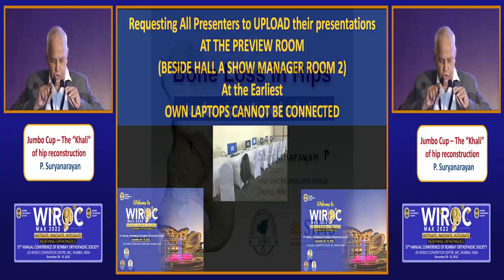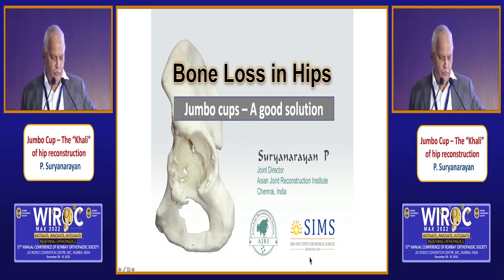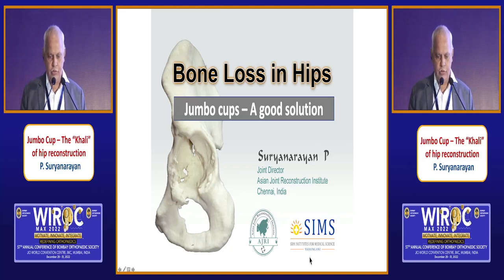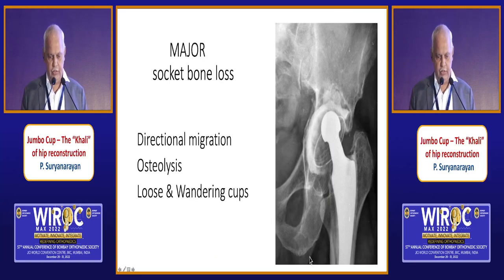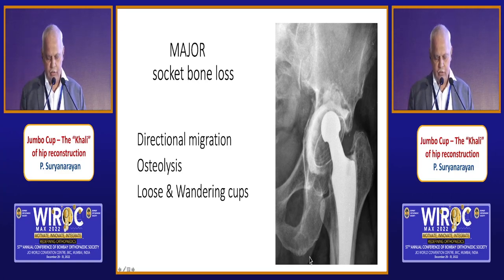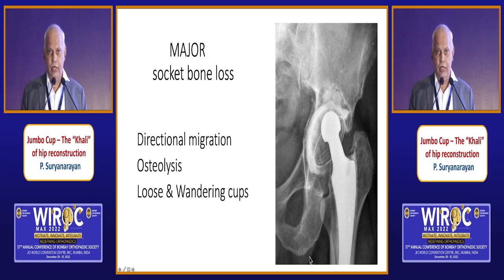Thank you, Chairman, and thanks for this invite to be at this grand meeting. My brief is to talk on bone loss in hips and the Jumbo Cup as a solution. Major bone loss is a huge problem. The directional migration of the loose and rocking component adds to this, along with osteolysis and wandering cups, which propagate if not picked up early.